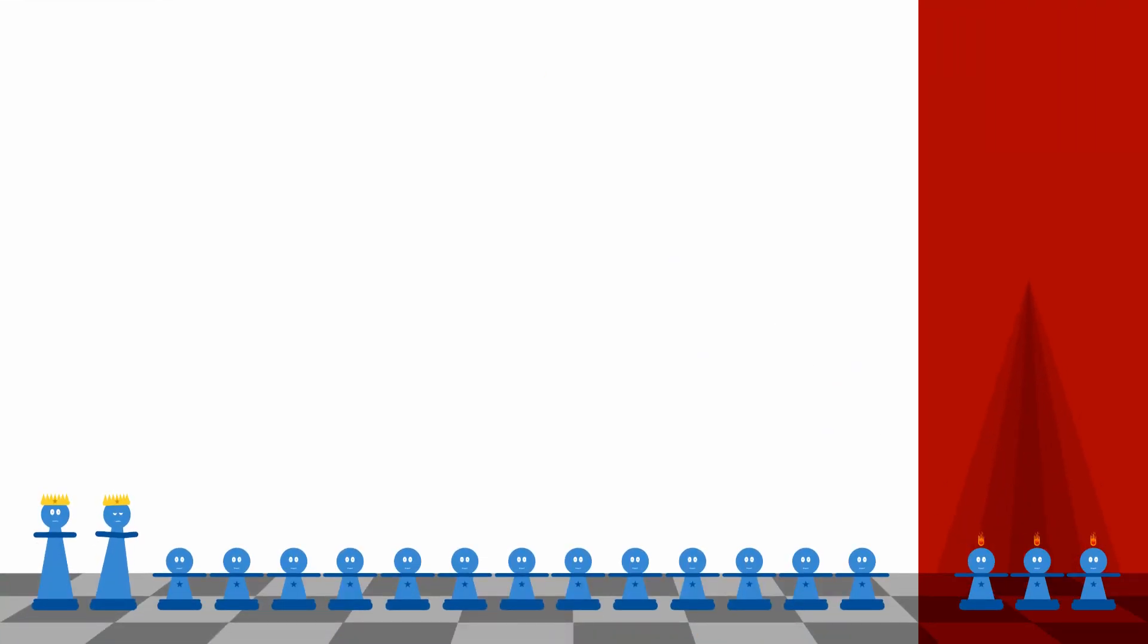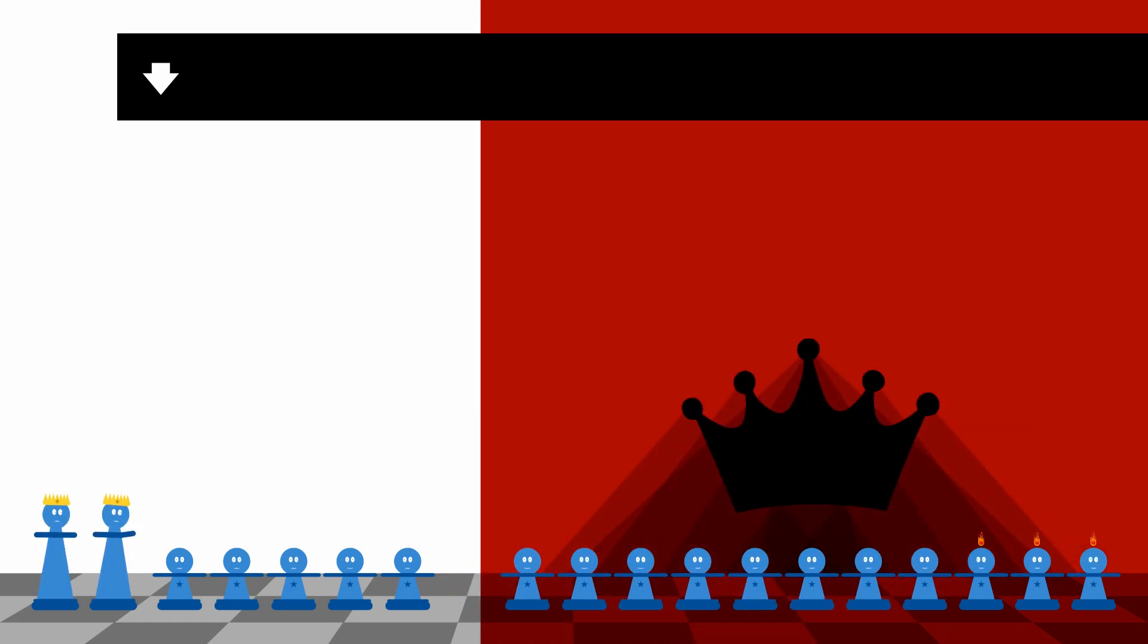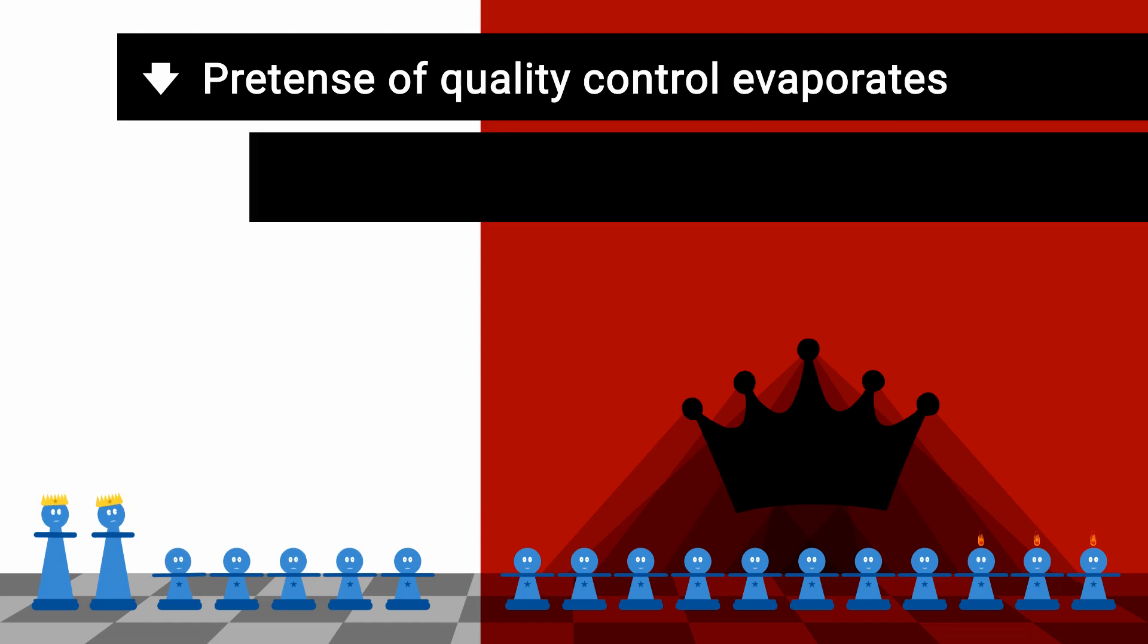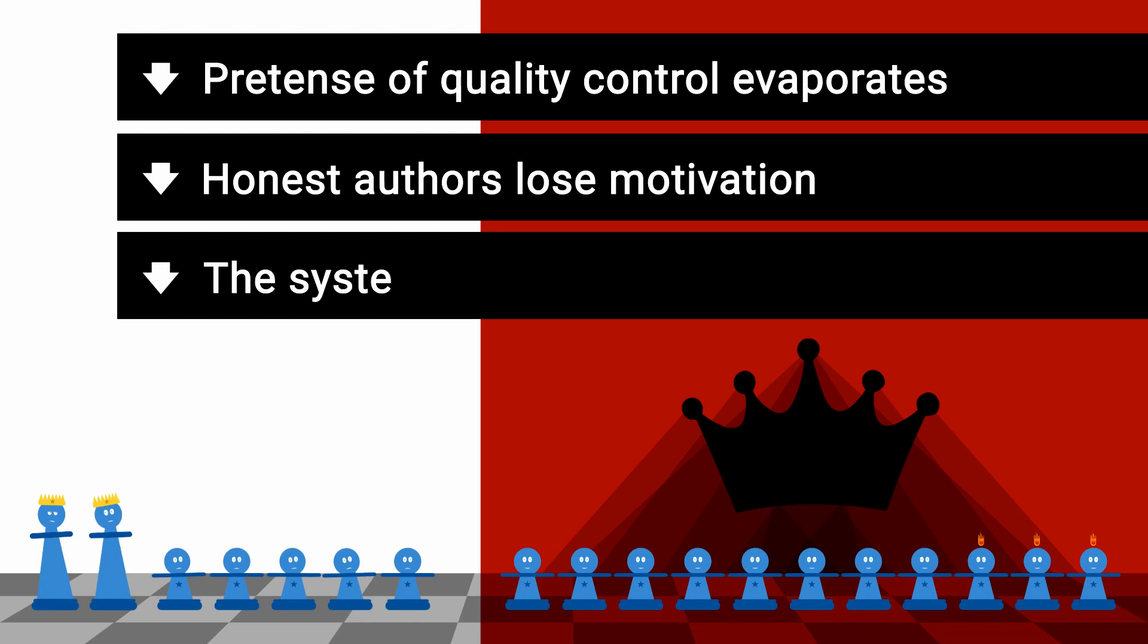If collusion rings are very small, they have a negligible effect on the conference. But, if collusion rings are big enough, any pretense of quality control evaporates, honest authors lose motivation to submit, and the system loses legitimacy.